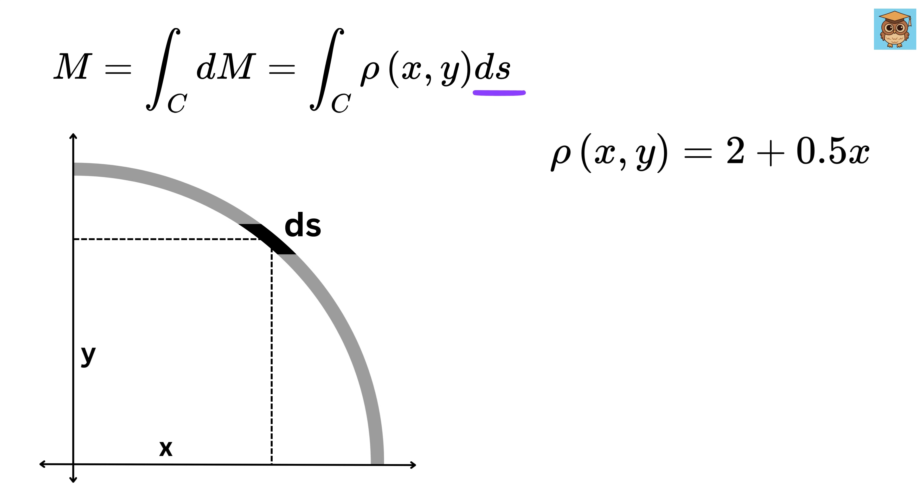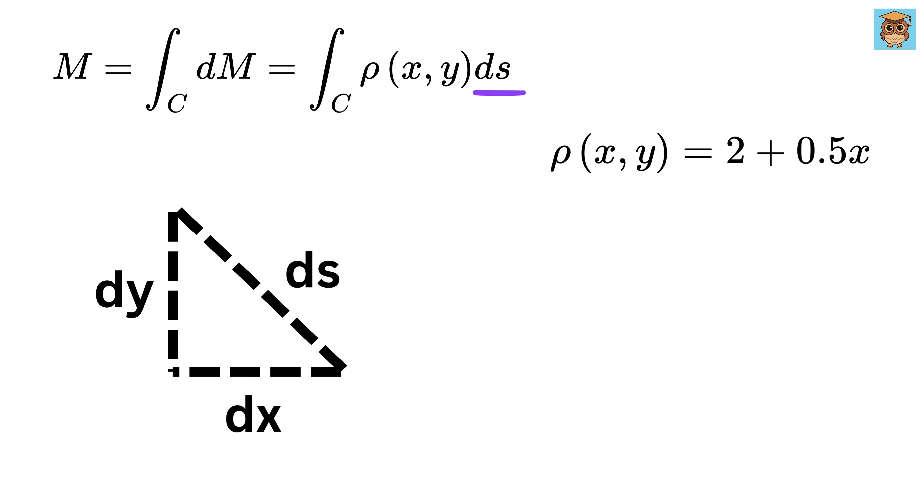When this arc is very small, we can simply approximate it as a straight line, right? Now, because the wire is curved, we need to account for both x and y changes. So let this be dx change, and this be dy change. So using Pythagoras' theorem, we get ds equals square root of dx squared plus dy squared.